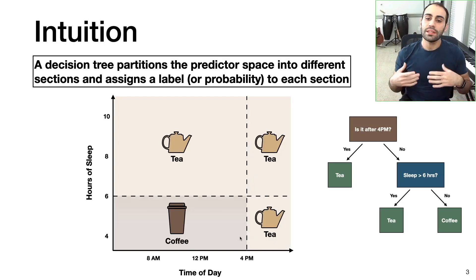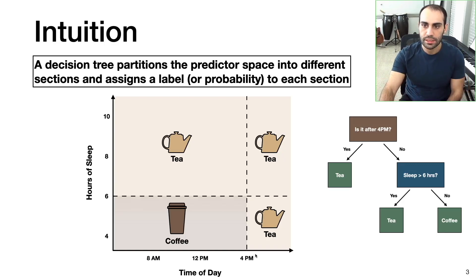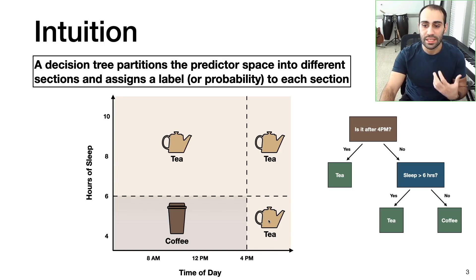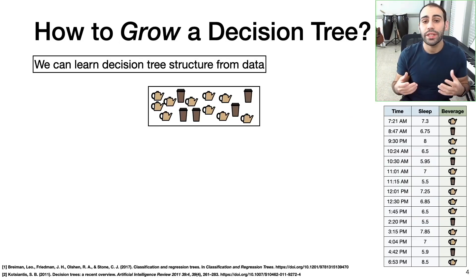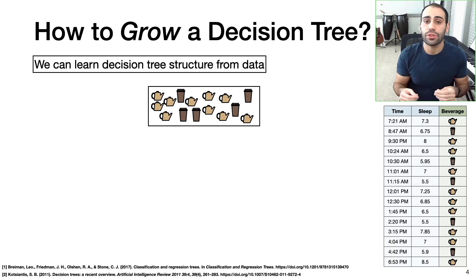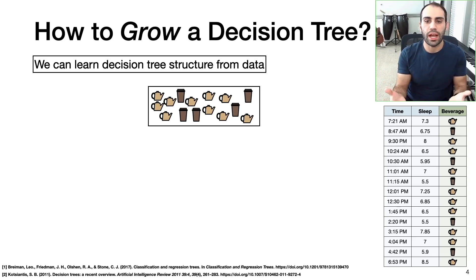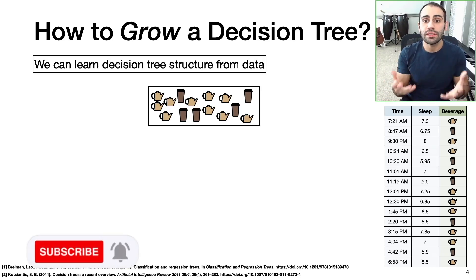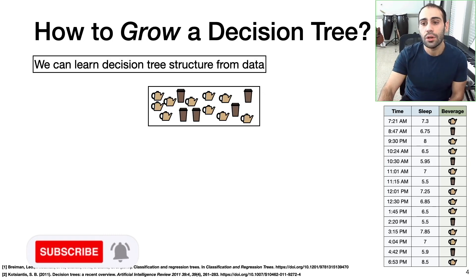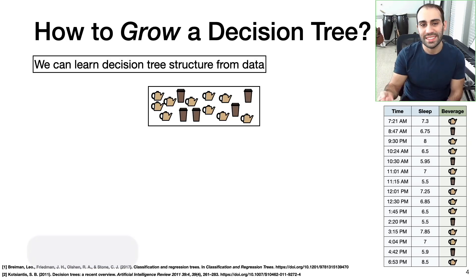Intuitively, this is all a decision tree is doing — taking the predictor space, splitting it into different sections, and assigning a label to each section. Now that we have a basic understanding of what decision trees are and an intuition for how they work, a natural question is: how can we bring this into practice? How can I use a decision tree in the real world?